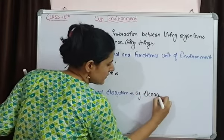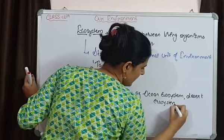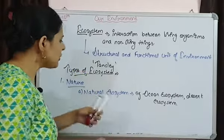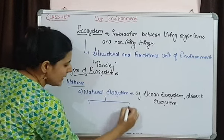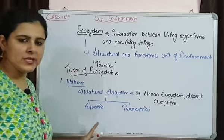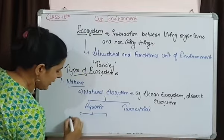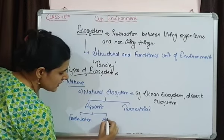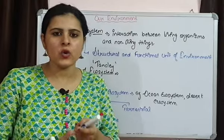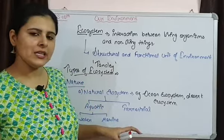Natural ecosystems include both aquatic and terrestrial types. Aquatic ecosystems are those present in water, while terrestrial ecosystems are present on land. In aquatic ecosystems, we have fresh water ecosystems — such as lakes, ponds, and wetlands — and marine ecosystems where salty water is present, including oceans and coastal areas.